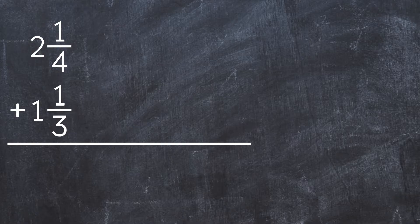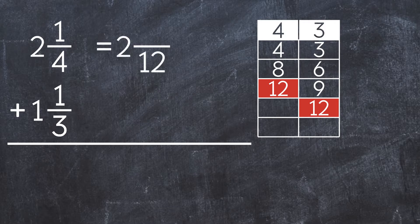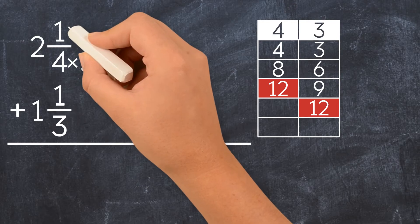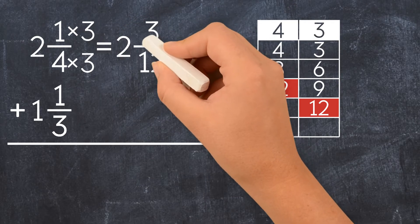We do this by finding the least common multiple between 4 and 3. So the common denominator is 12. What can we multiply 4 by to get 12? 3. We also have to multiply the numerator by 3 to get 2 and 3 twelfths.